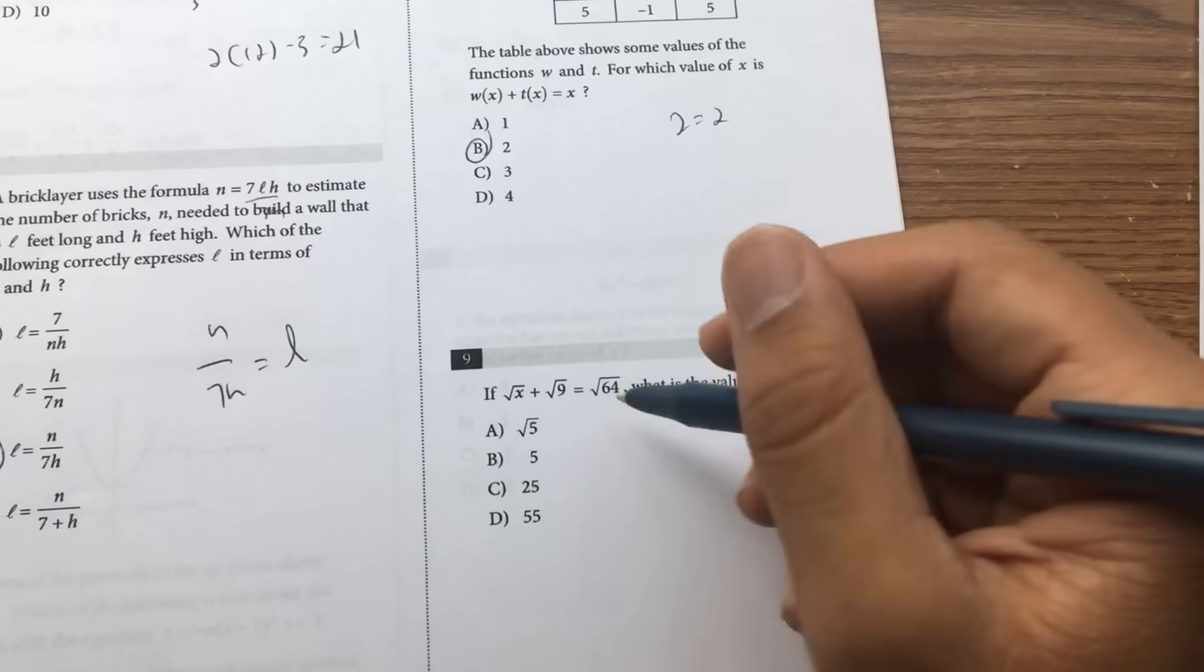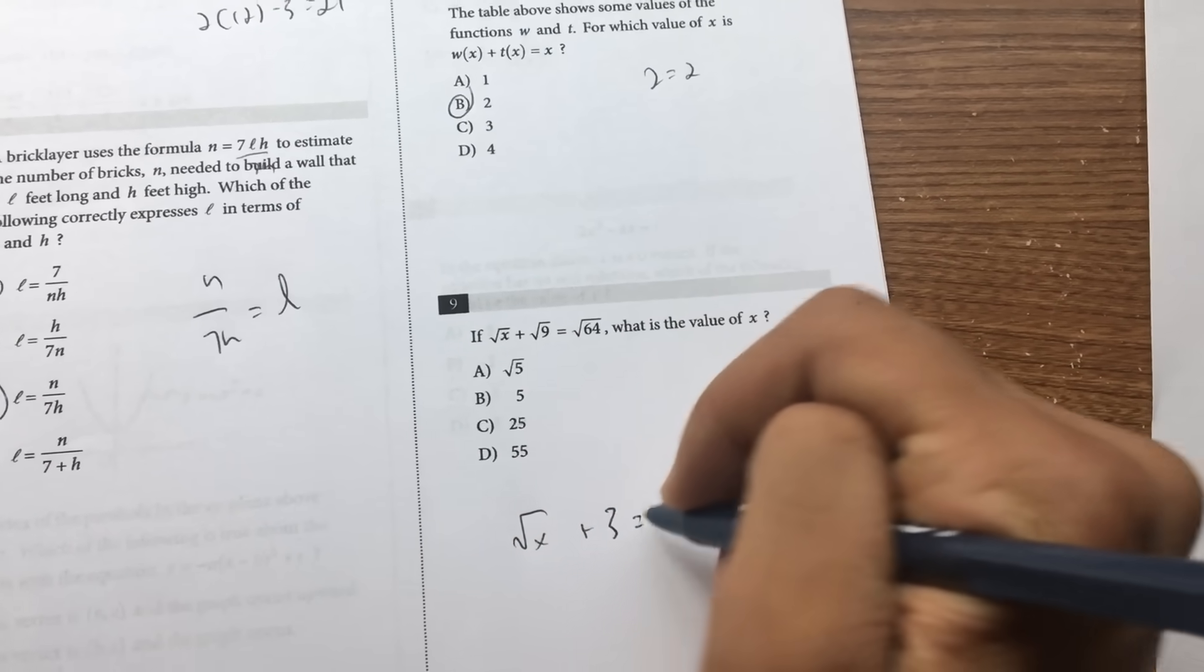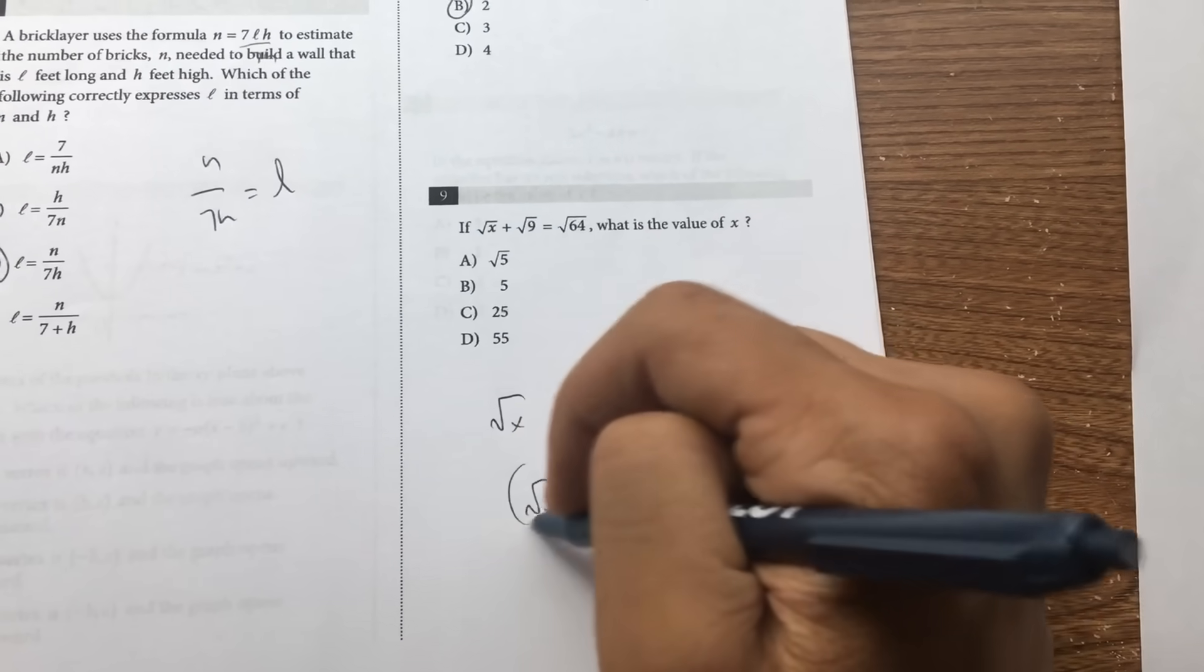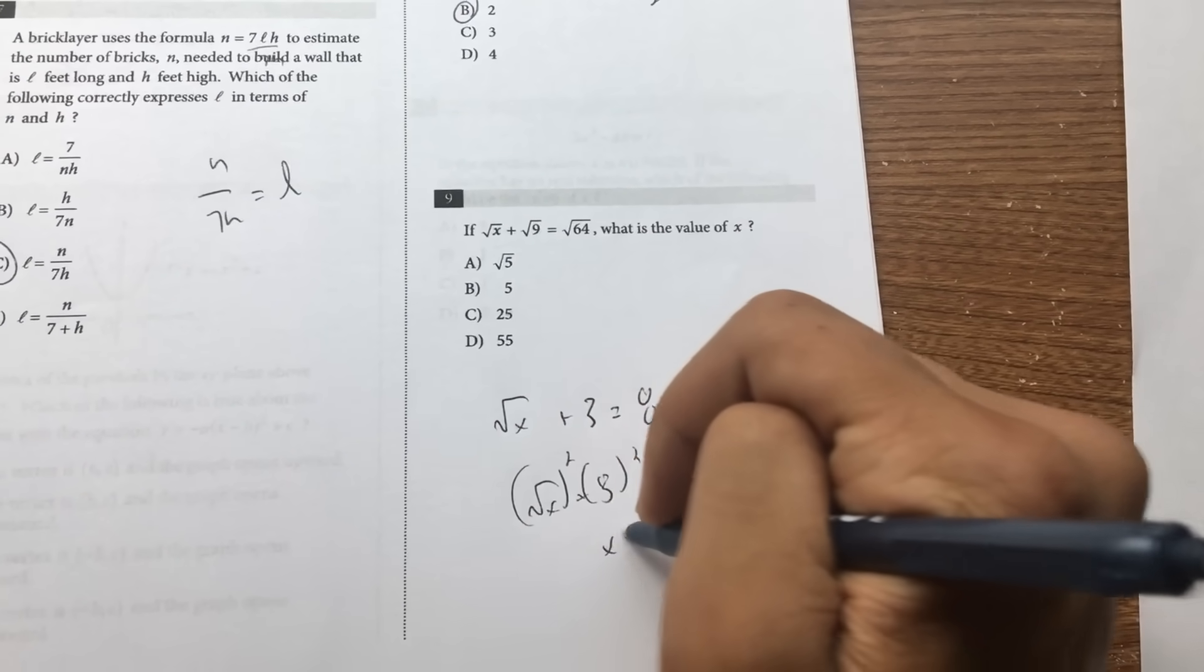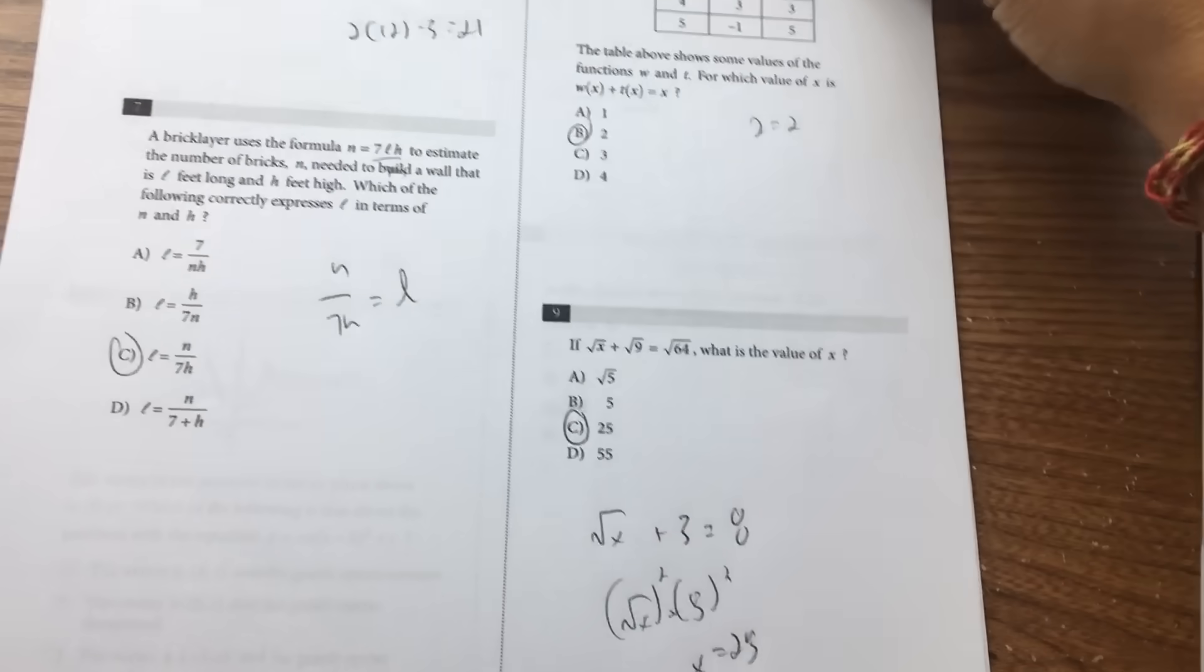Number 9, it's simple, just simplify everything first. Square root of x plus 3 is equal to 8, square root of x equals 5. Square this, square this, x equals 25. Ideally you should be able to look at the problem and do it mentally instead of rewriting it out.